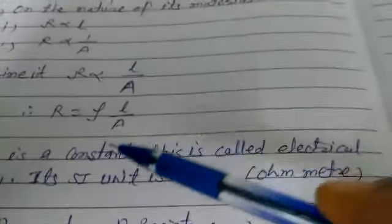VI graph, factors on which the resistance of a conductor depends, R equal to rho L upon A, and we have learned about resistance.